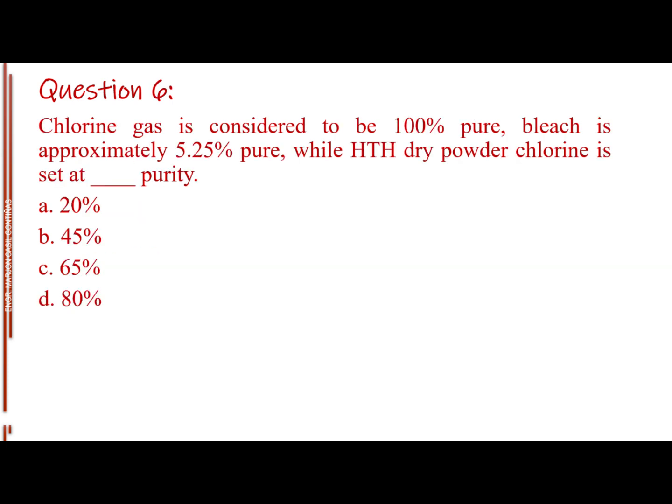Question number six. Chlorine gas is considered to be 100% pure, bleach is approximately 5.25% pure, while HTH dry powder chlorine is set at blank purity. Letter A, 20%. Letter B, 45%. Letter C, 65%. Letter D, 80%. The answer is Letter C, 65%.